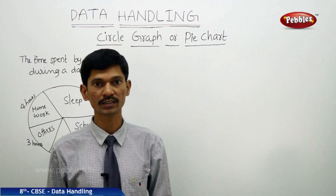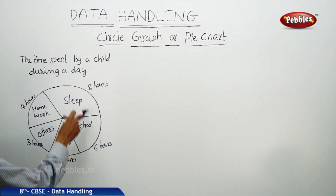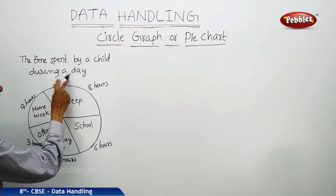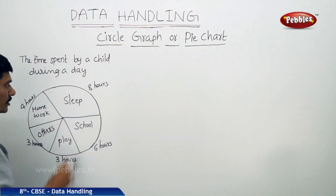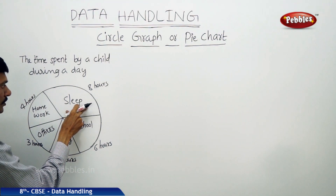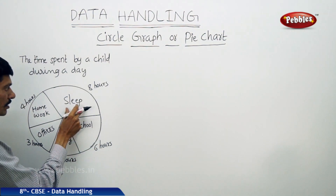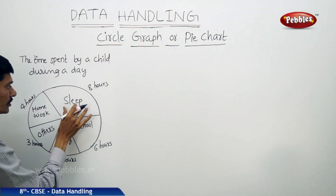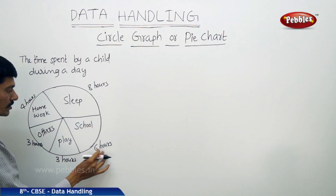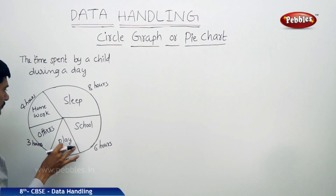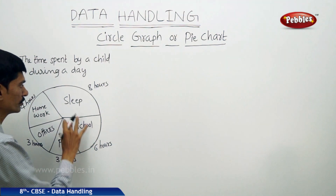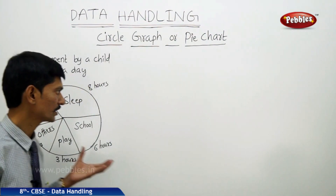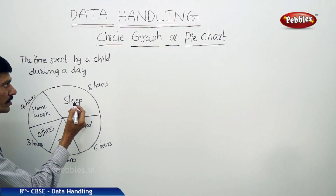Have you ever seen data represented in a circular form? Data can also be represented using a circle graph or pie chart. Let us take an example to understand it easily. The time spent by a child during a day is given in a circular form, where the whole circle is divided into sectors. Each sector represents an activity of the child during the day, like sleeping, school, play, homework, and others.